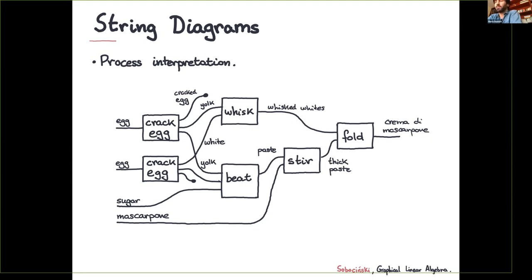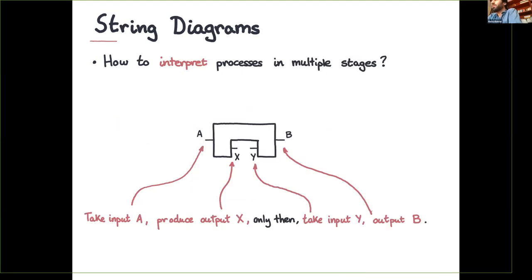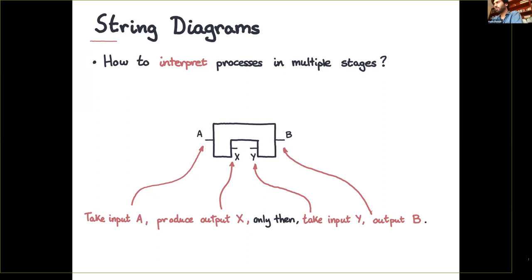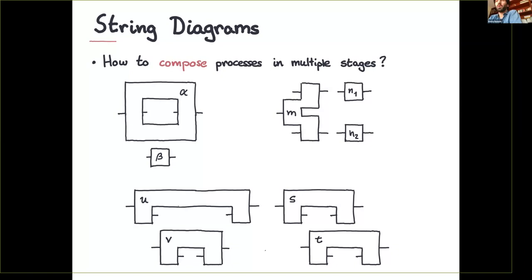Morphisms or boxes are interpreted as processes that transform those systems. What happens when a morphism doesn't follow this standard shape for inputs and outputs? What happens when we have a process that takes some input, produces output x, then takes an input y, and produces output b? The question is not only what these things are, but also how we should be composing them.